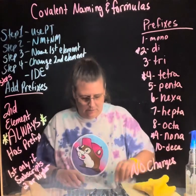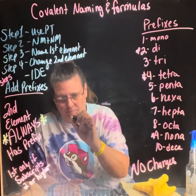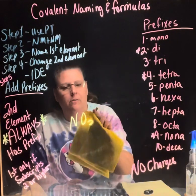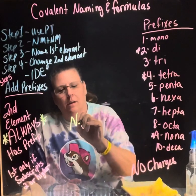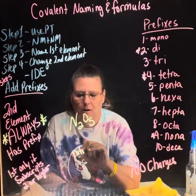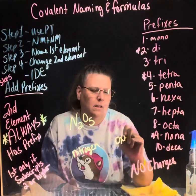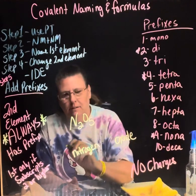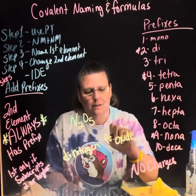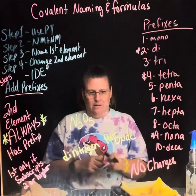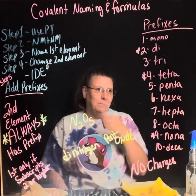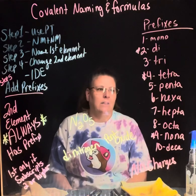Let's try N₂O₅. This is nitrogen and oxide — dinitrogen. For the second part, the prefix penta ends in 'a' and oxide starts with 'o,' so you drop the 'a' and get pentoxide. Whenever a prefix ending in 'a' is followed by a word starting with 'o,' drop the 'a.' So it's dinitrogen pentoxide. Same rule applies to tetroxide, hexoxide, heptoxide, etc.